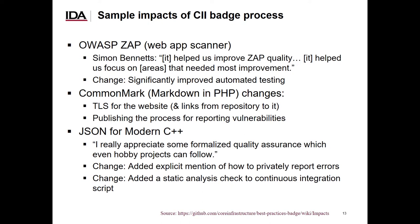Many projects have said that getting a badge has been very helpful. The OWASP ZAP project knew that they should have automated testing, but the desire to get a badge helped them turn that aspiration into a reality. The CommonMark project implemented HTTPS for their website and published how to report vulnerabilities. The library JSON for Modern C++ added information on how to privately report errors and added a static analysis check to their continuous integration script. These changes weren't difficult, and the JSON for Modern C++ project noted that they could be done even by hobby projects.